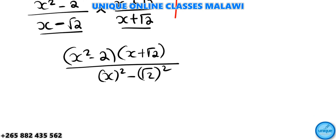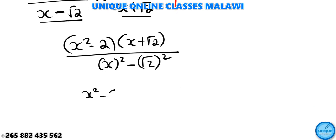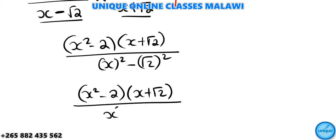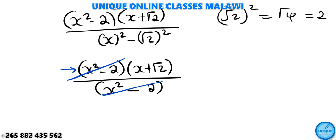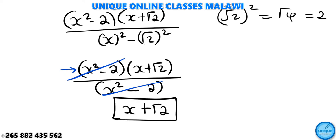The next thing we need to do: x squared minus 2, and x plus √2. In the denominator, x squared minus √2 squared. The answer is √4, and the root of 4 is 2. So here we're going to have 2. The denominator bracket is the same as the one which is here, so you can just cancel them. The remaining answer will be x plus √2, so this is the correct answer.